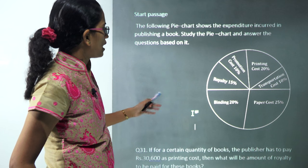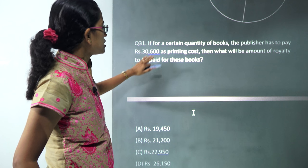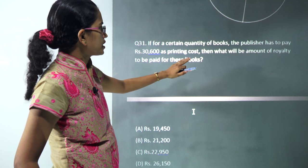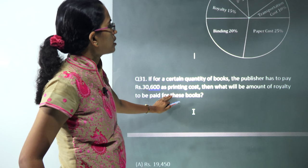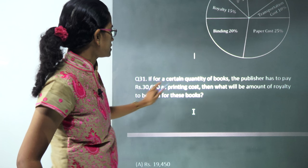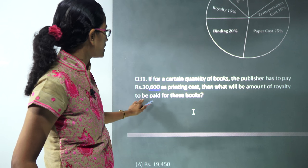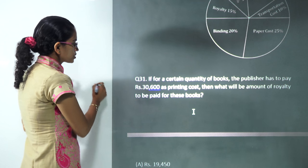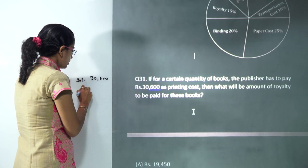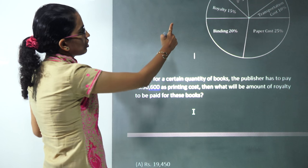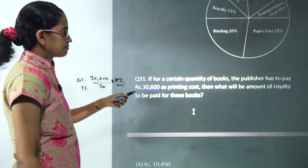Based on this you have the total expenditure that's given. The first question says if for a certain quantity of books the publisher has to pay 30,600 as the printing cost, how much is the amount of royalty he has to pay? So 30,600 is 20%, one percent would be divided by 20, and royalty cost is 15%, so multiply by 15%.